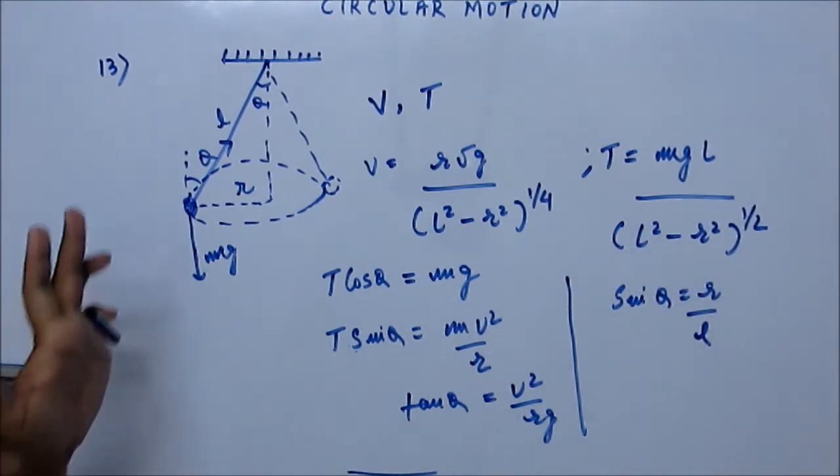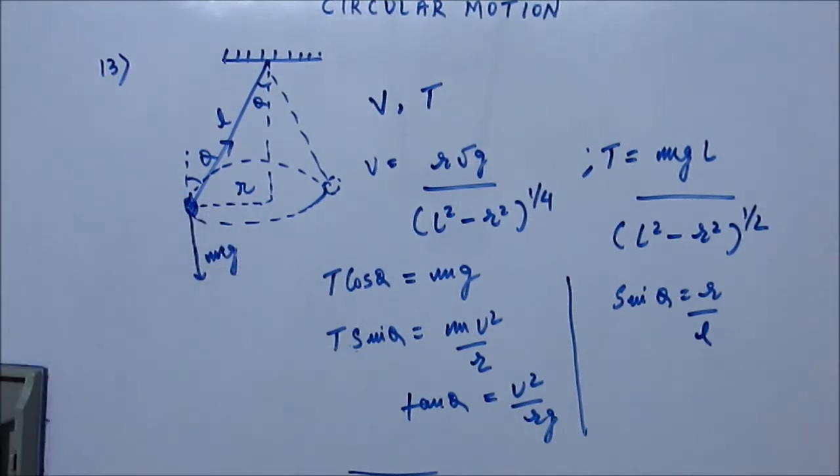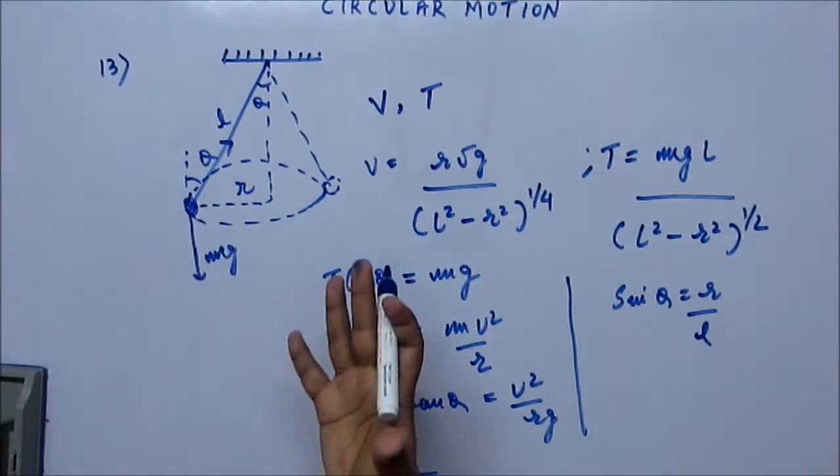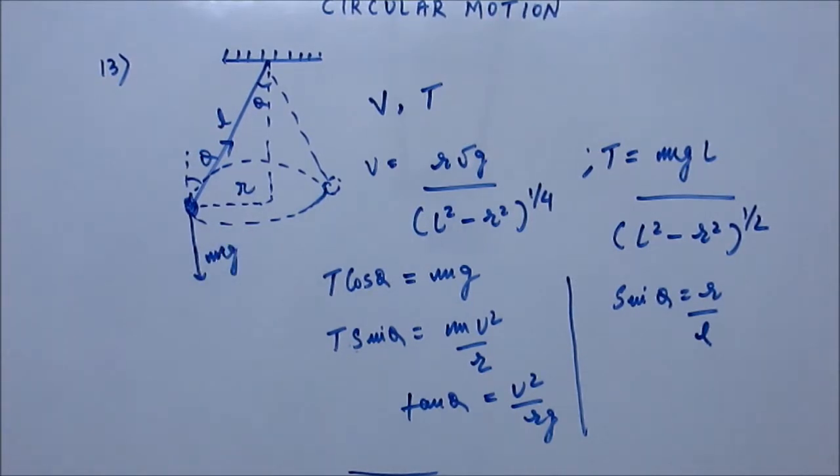So it's pretty basic. All you have to see is that if the bob is going in uniform circular motion, the horizontal force will become the centripetal force. That's it.